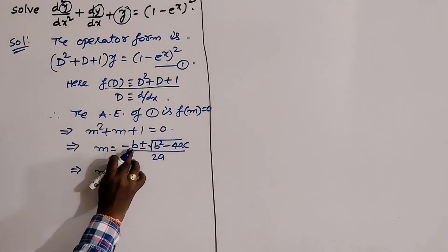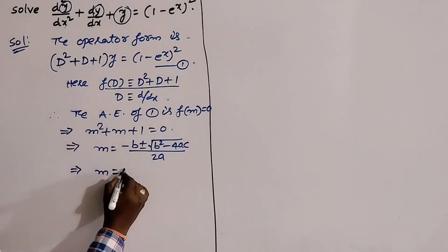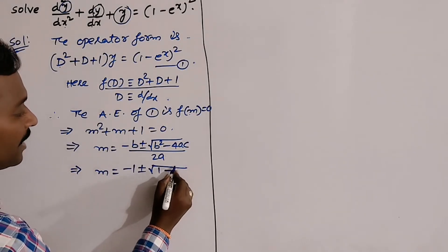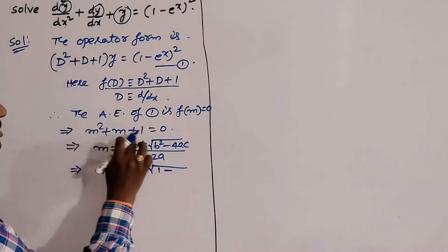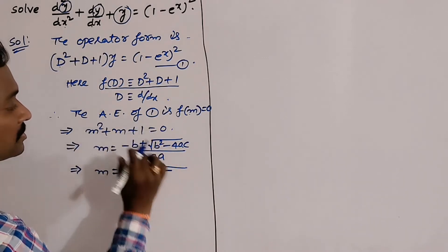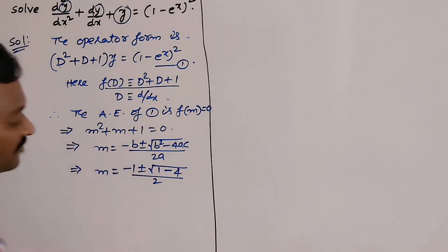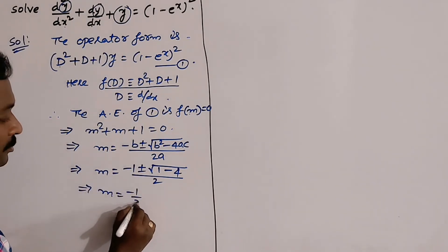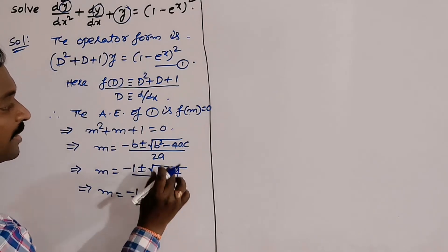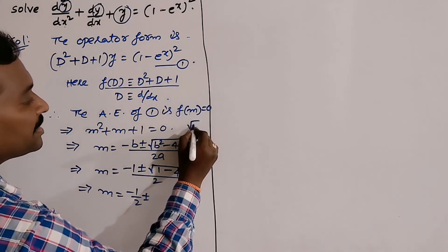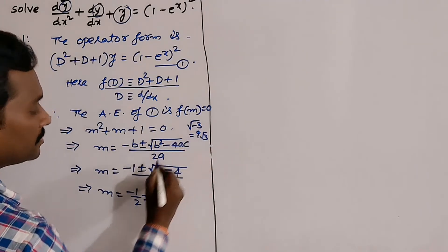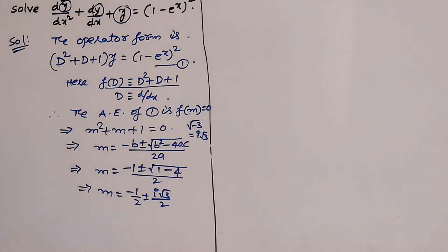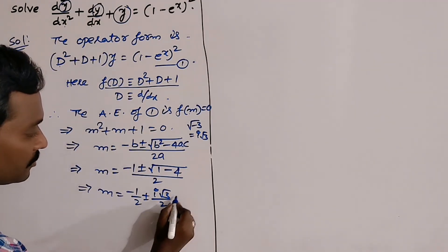The coefficient of m is b = 1, so m = (−1 ± √(1² − 4·1·1)) / (2·1) = (−1 ± √(1 − 4)) / 2 = (−1 ± √(−3)) / 2. Now √(−3) = i√3, so m = −1/2 ± i√3/2. These are complex conjugate roots.